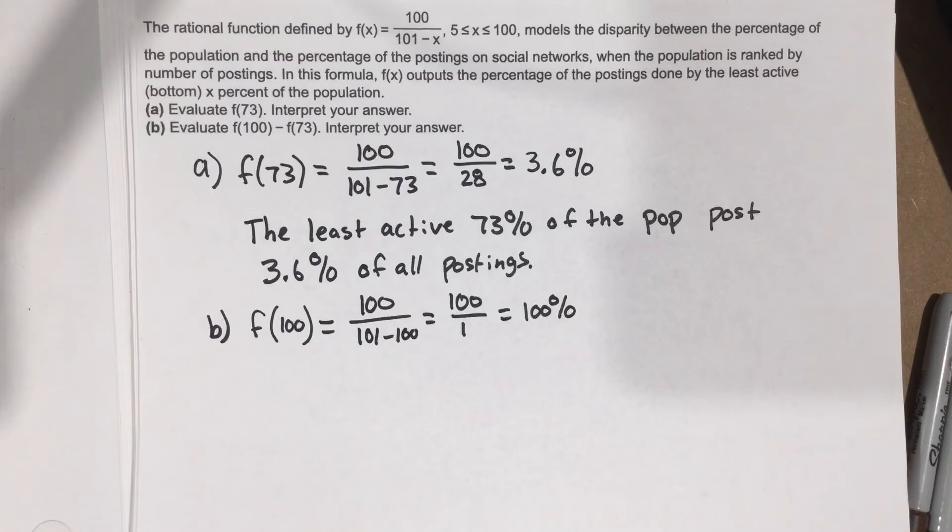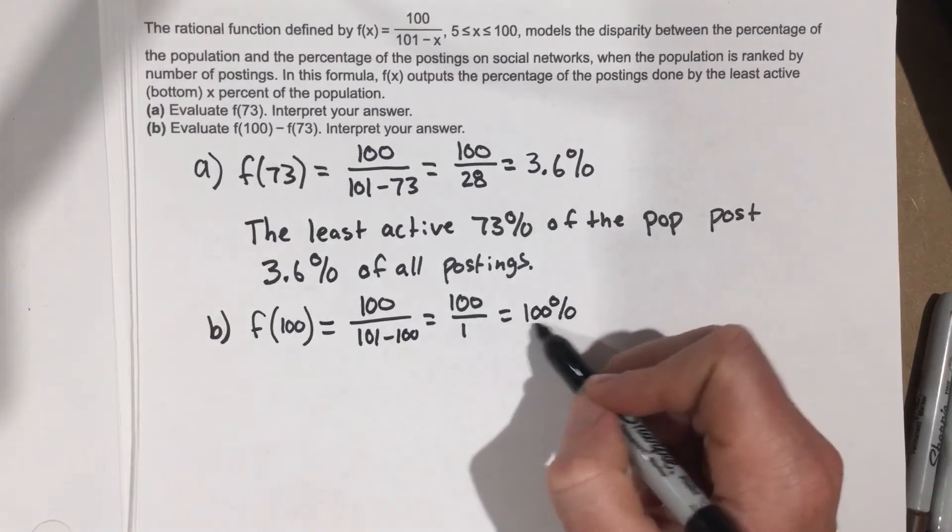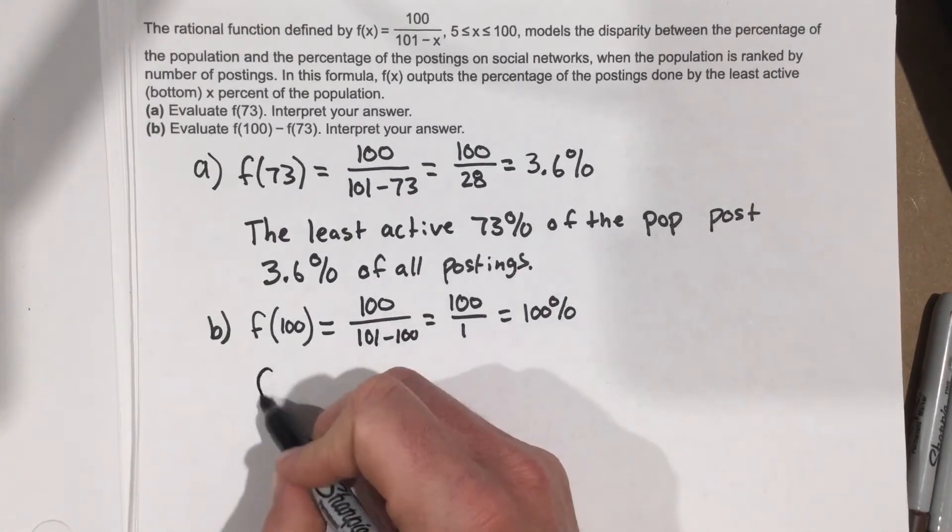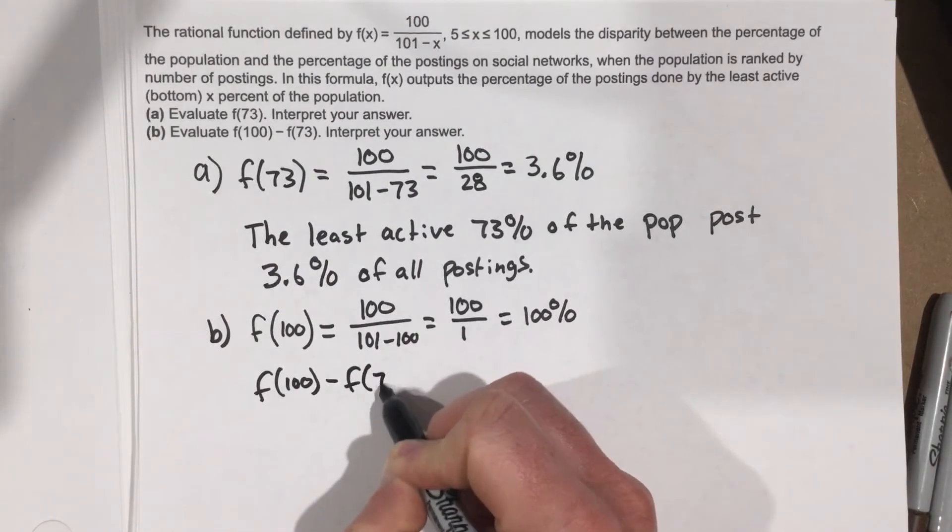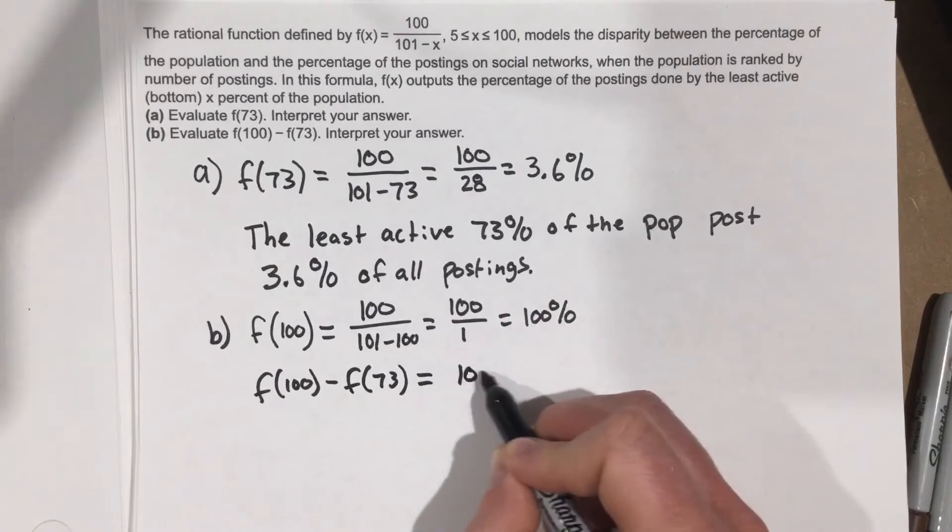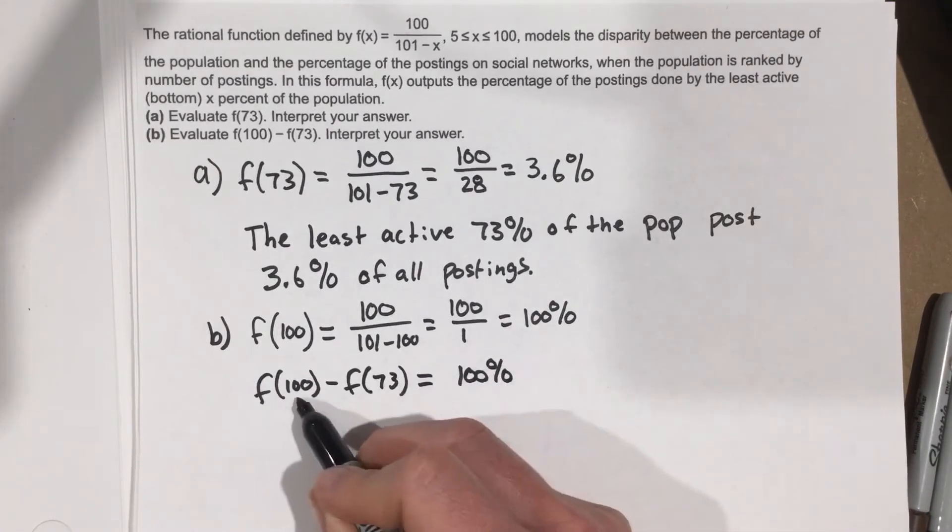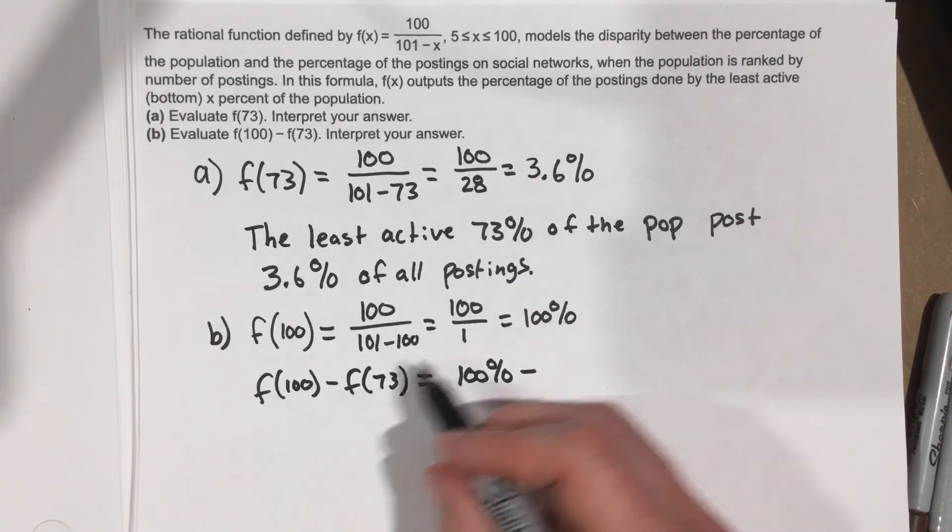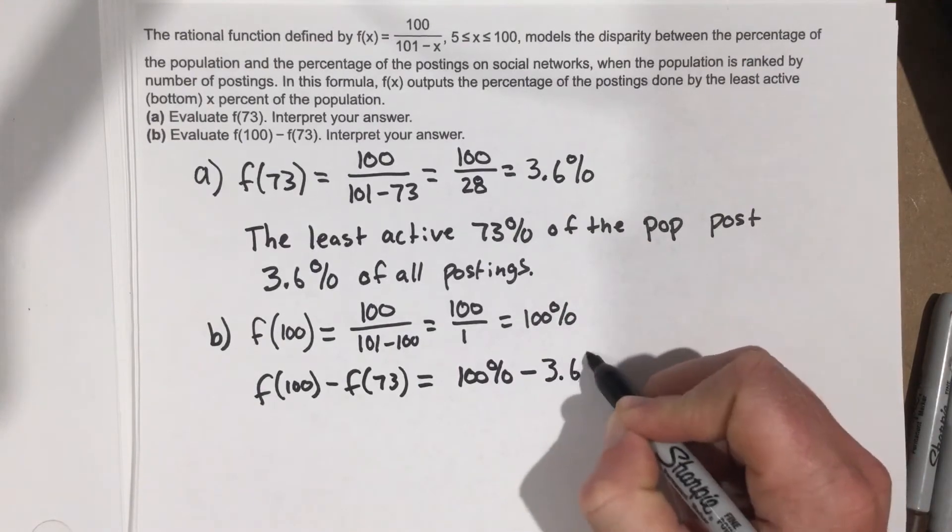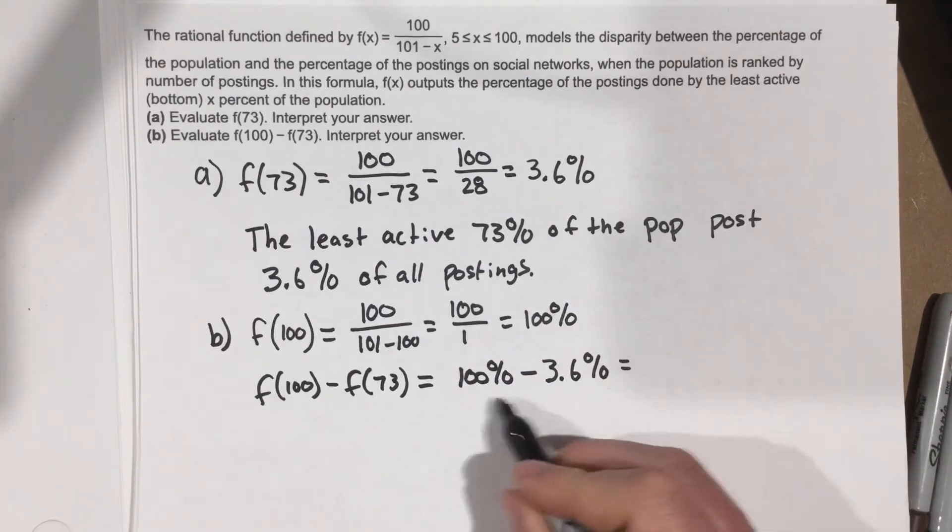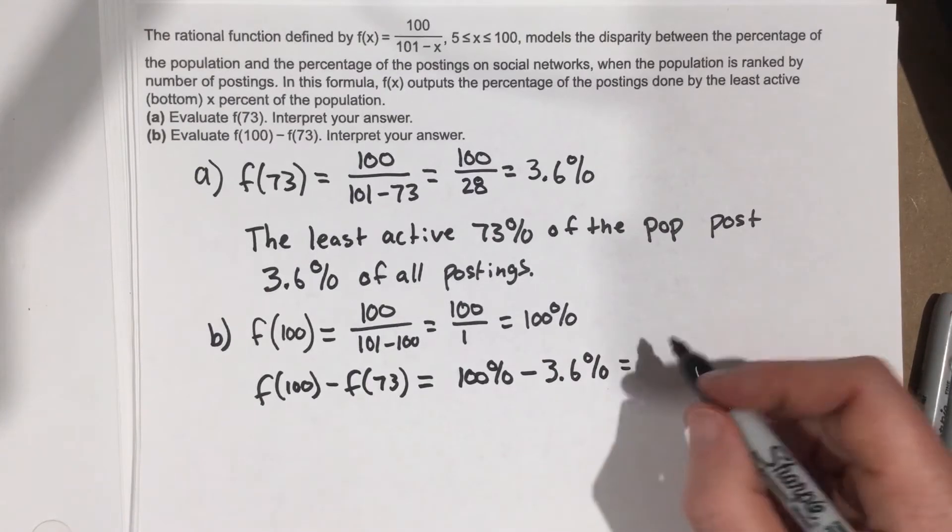So we take f(100) minus f(73). We know that f(73) is 3.6%. If we subtract that we end up with 96.4%.